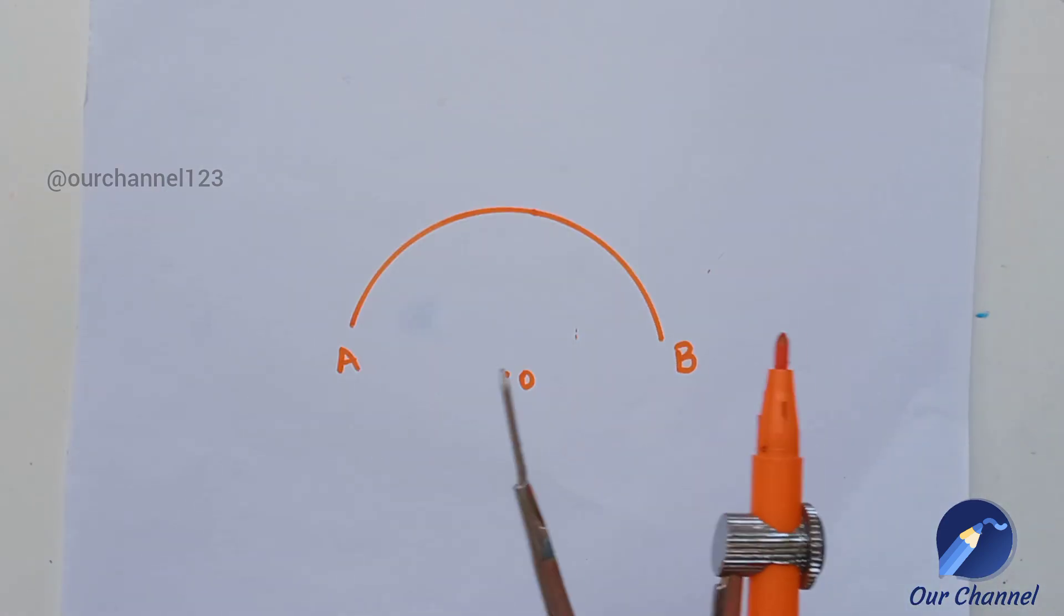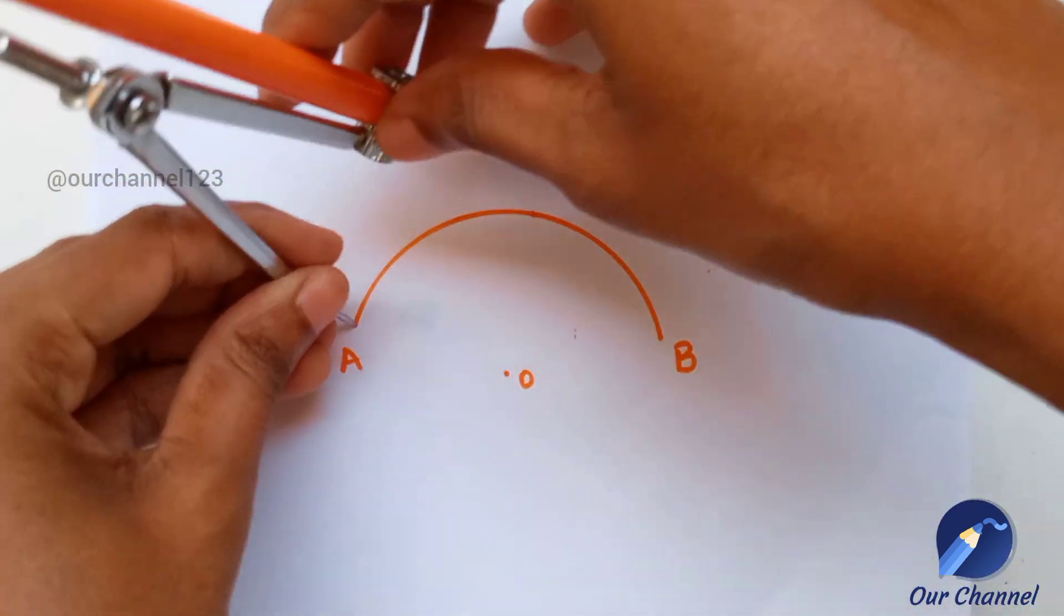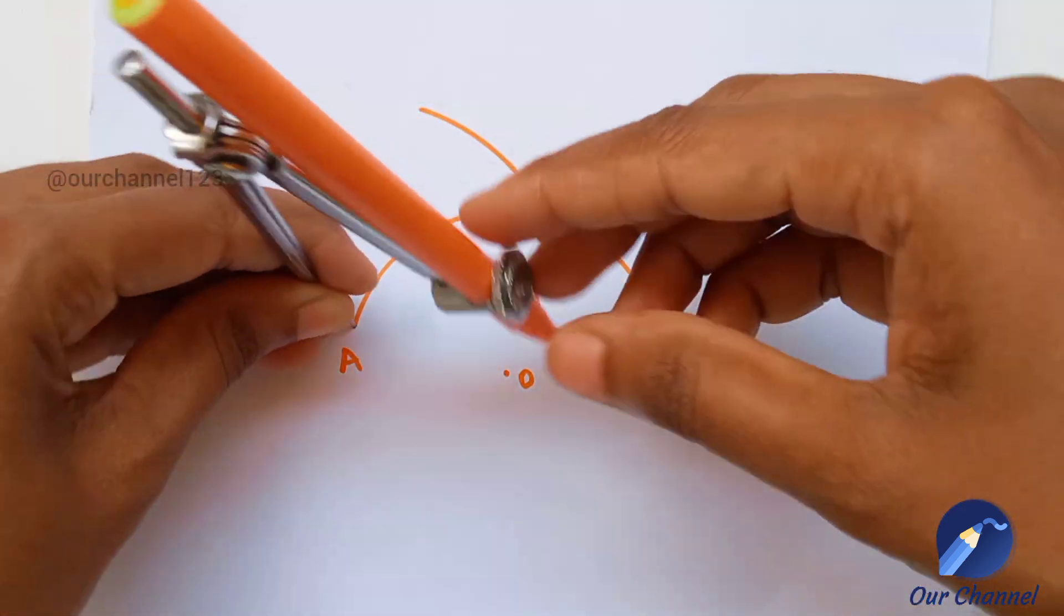With A as center, take radius more than half of AB and draw arcs on both the sides.